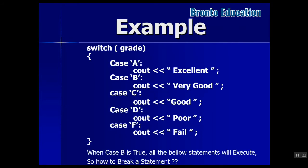In this example, the grade variable is a character data type with values A, B, C, D. If the user enters A, 'excellent' will be displayed. If grade equals B, it will print 'very good.' Since I didn't use break, when C is true it shows 'good', then falls through to 'poor' and 'fail' as well. If grade is A it shows excellent, very good, good, poor, and fail — so we must use break.